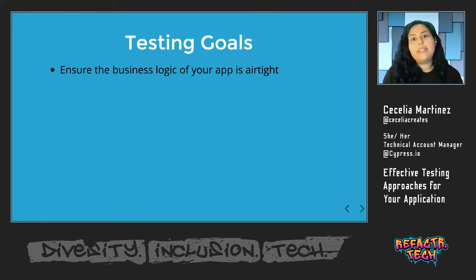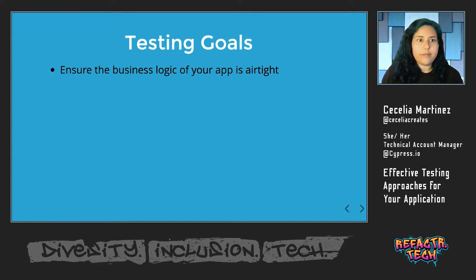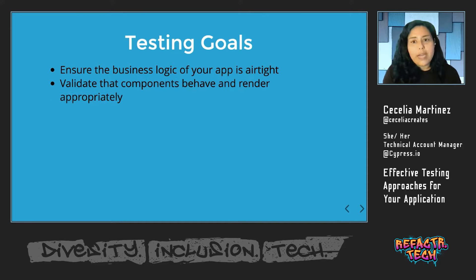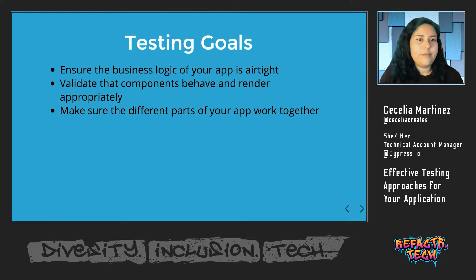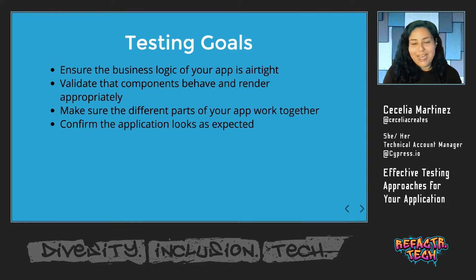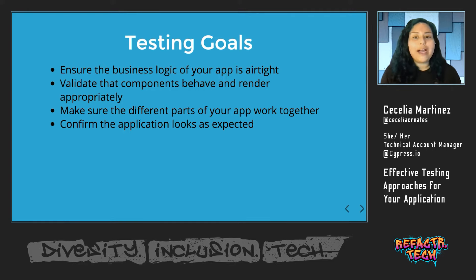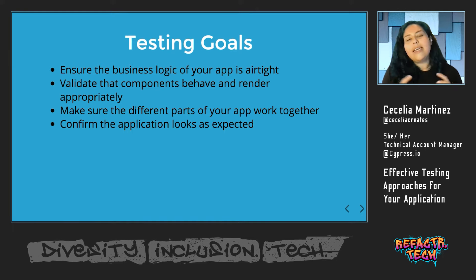The first is to ensure that the business logic of your app is airtight — making sure that all of your functions are working appropriately and that you're going to have the expected outcome based on certain inputs. Another goal is to validate that components on your front end behave and render appropriately. Another goal is making sure that the different parts of your application work together — is the front end and the back end working in harmony? Are they connected well? Another goal is confirming that the application looks as expected. You spend a lot of time fighting with that CSS, and you want to make sure those styles are actually appearing as they should, whether they look the same across different browsers or on mobile viewport versus desktop viewport — these are all things that testing can help you accomplish.